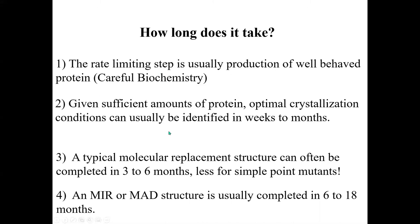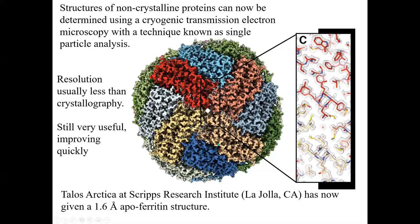How long does the whole process take? It'll take weeks to months to optimize crystallization depending on how cooperative your protein is. Once you have the crystals, if it's a typical molecular replacement structure, you might complete the whole project in three to six months. A de novo structure determination might take half a year to 18 months. Some of that time reflects a learning curve if you haven't done this before; if you're already an expert, it can move much faster.